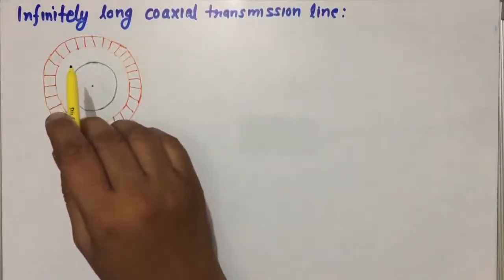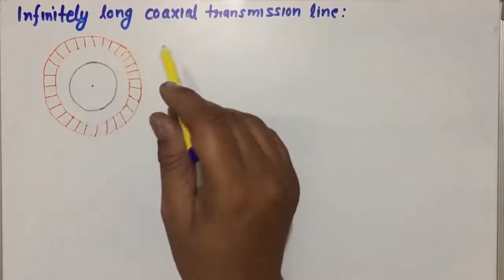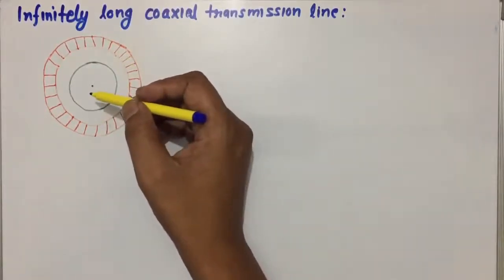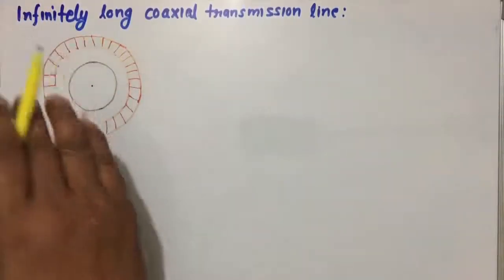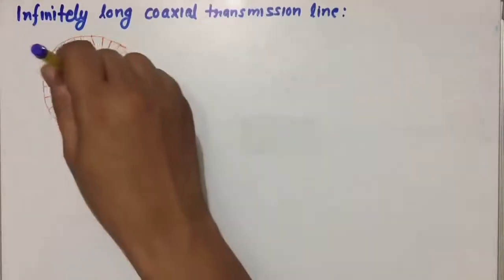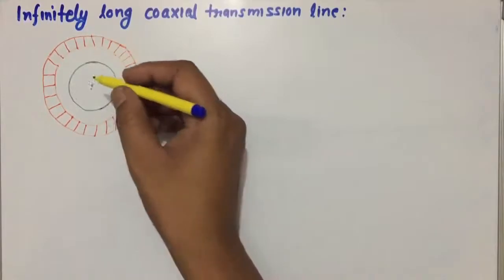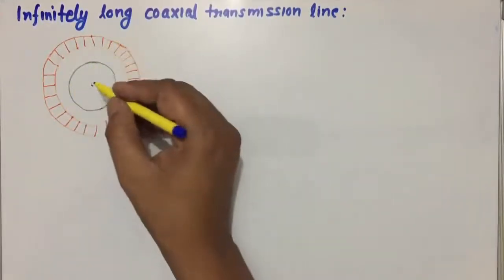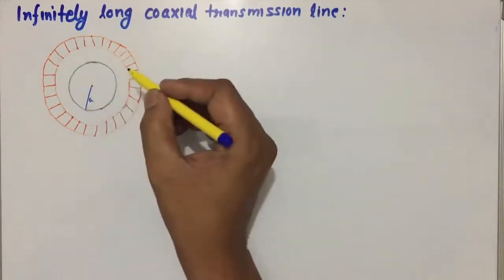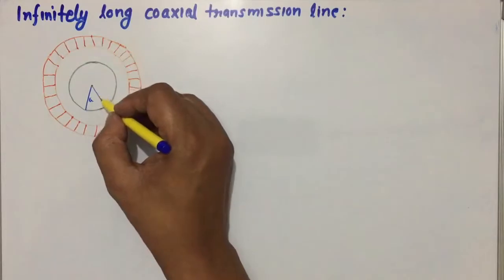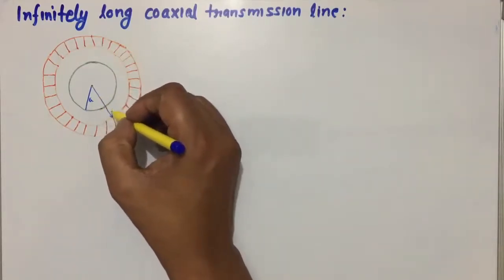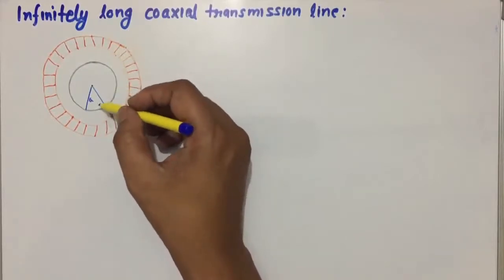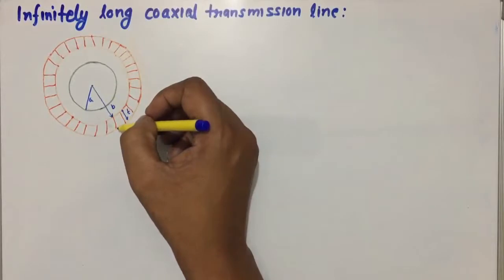We will find the magnetic field intensity for an infinitely long coaxial transmission line. Consider the line consisting of two concentric cylinders with their axis along the Z-axis. The inner conductor has radius A, the outer conductor has inner radius B and thickness T, so the outer radius of the second conductor will be B plus T.